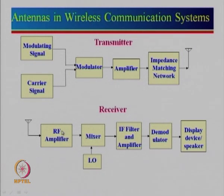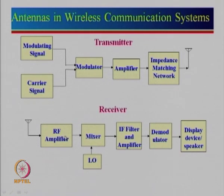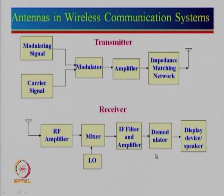The RF signal at a higher frequency is converted down to an intermediate frequency (IF). For FM radio, the RF is 88 to 108 megahertz and the IF is around 10.7 megahertz. For AM radio, the RF is 530 to 1620 kilohertz and the IF is about 455 kilohertz. The signal is then filtered, amplified, demodulated, and connected to a display or speaker depending on the application.